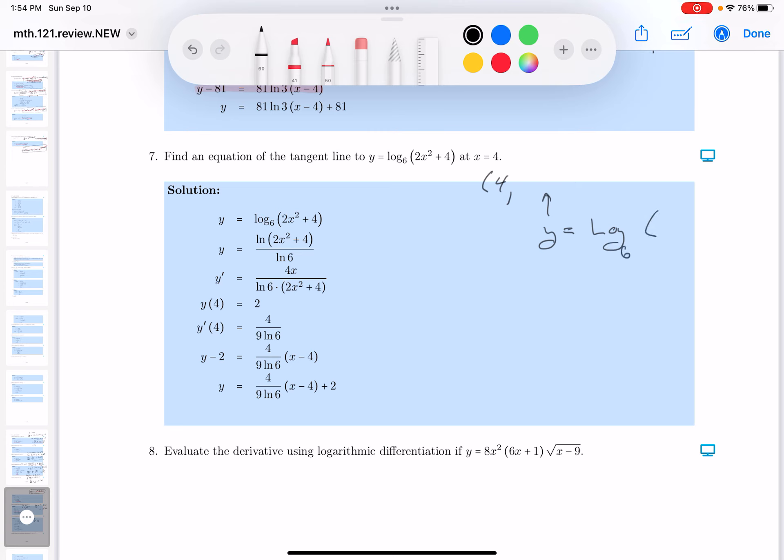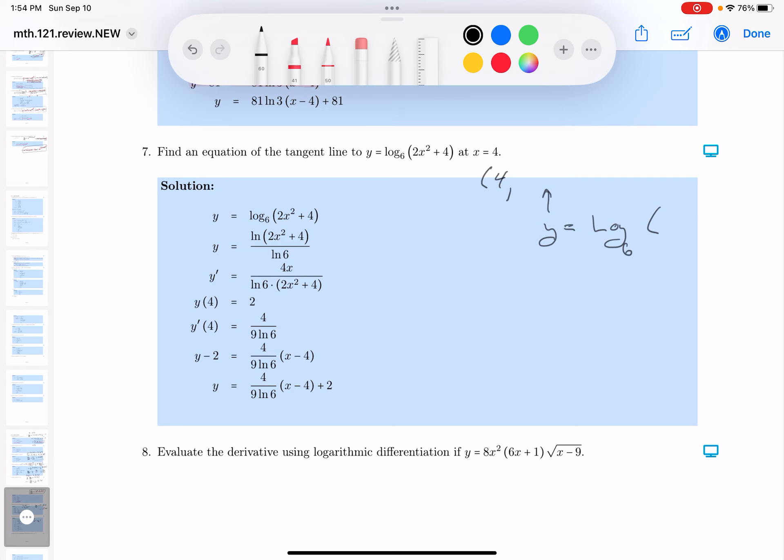Log base 6. And you get 2x4. Well, you're going to get, if I square root of 4 is 16, 2 times 16 is 32, and 32 plus 4 is 36.